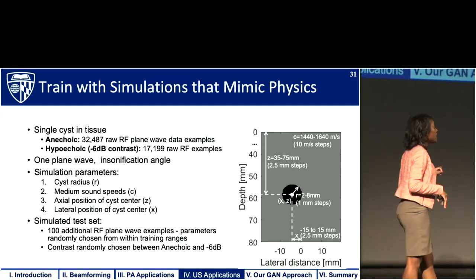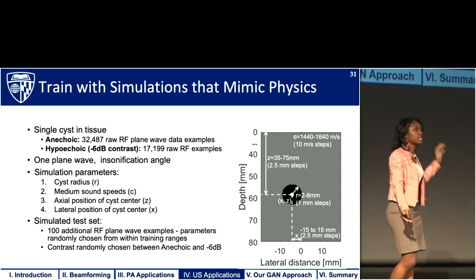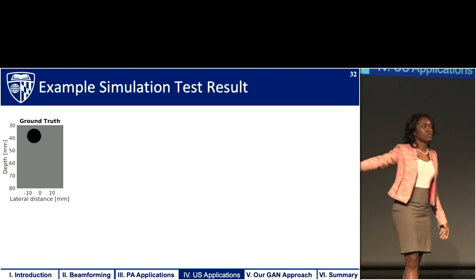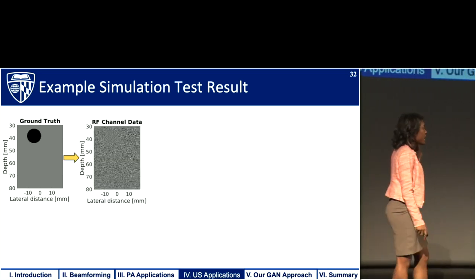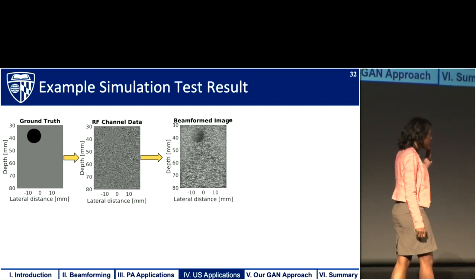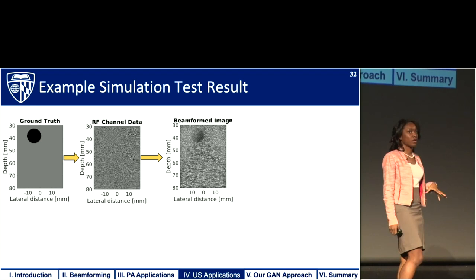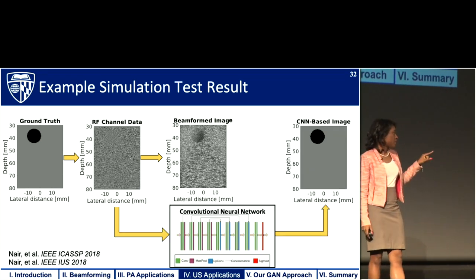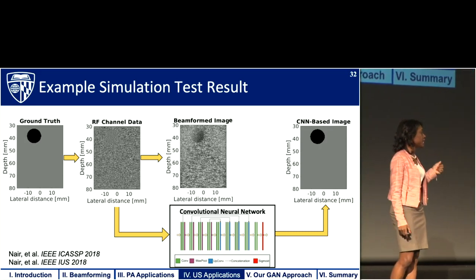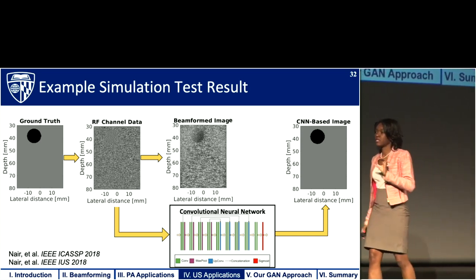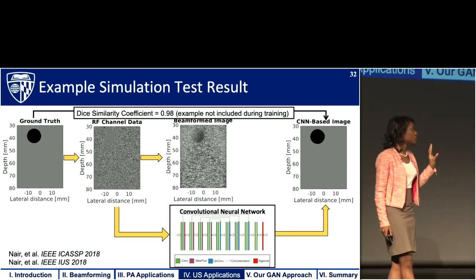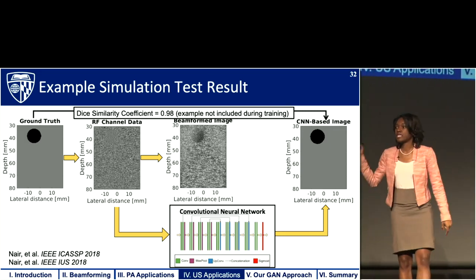The test set includes amplitudes ranging from anechoic to -6 dB. An example result: this is the ground truth provided to the simulator, giving us raw channel data, and when we apply beamforming we get an image containing clutter within the region that should be anechoic. Our goal is to pass the raw channel data to the network trained with the previous simulation sets and get a CNN-based image that more clearly displays the structure of interest. We know what that structure should be because we simulated it, so we can compare our ground truth to the output of the network and compute the Dice similarity coefficient.